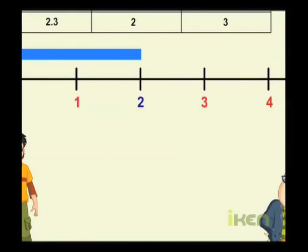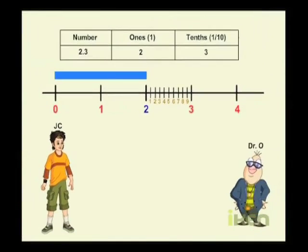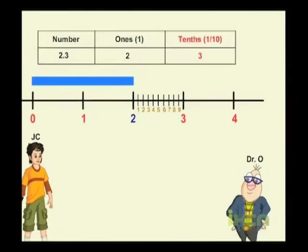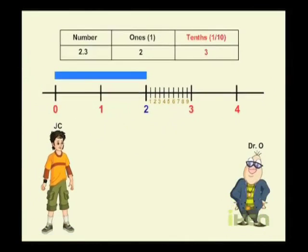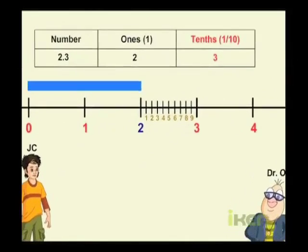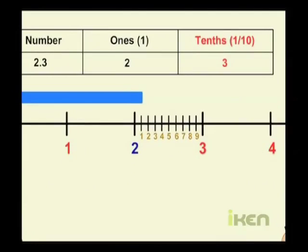we divide the segment between 2 and 3 into 10 equal parts. Since the number of tenths in the number are 3, we have to move till 3 in the tenths.